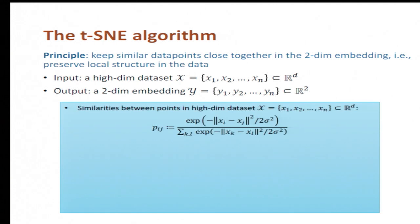So here's the algorithm. We first define a similarity measure between every two points in the high-dimensional dataset. So we define this Pij to be proportional to the exponential of the negative squared distance between Xi and Xj divided by some parameter.